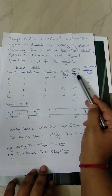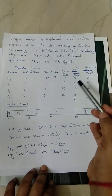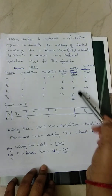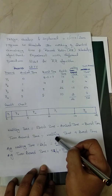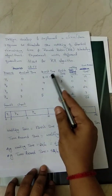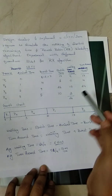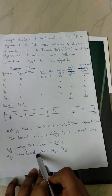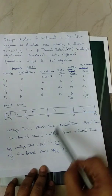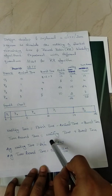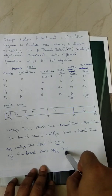Waiting time is calculated using the formula: finish time minus arrival time minus burst time. Adding all waiting times gives a total of 26. Turnaround time is calculated as waiting time plus burst time. Average waiting time is 26 divided by 4 processes, which equals 6.5 milliseconds. Average turnaround time is 52 divided by 4, which equals 13 milliseconds.